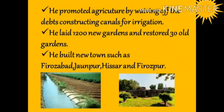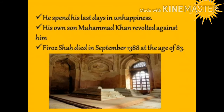He built new towns such as Firozabad, Jaunpur, Hissar, and Firozpur. Despite adopting a peaceful approach and efforts to organise the Sultanate well, he spent his last days in unhappiness. His own son Muhammad Khan revolted against him, and Firoz Shah died in September 1388 at the age of 83.